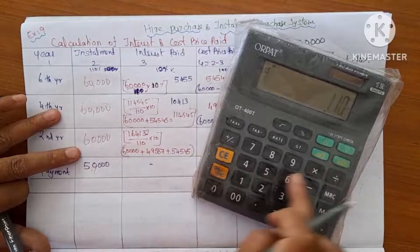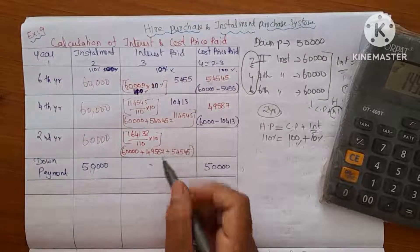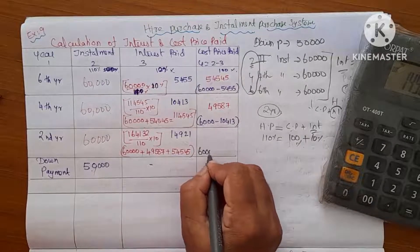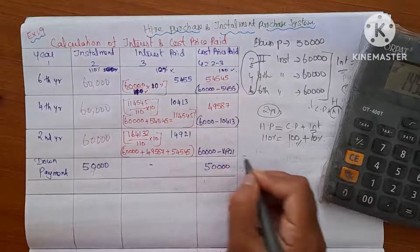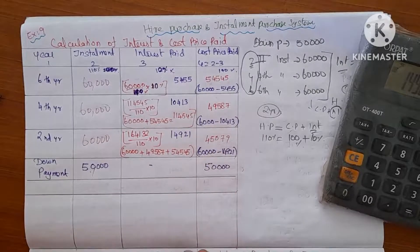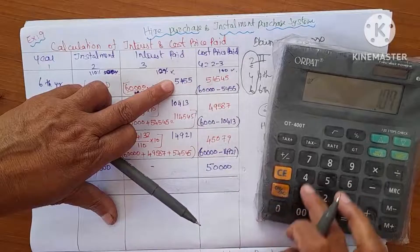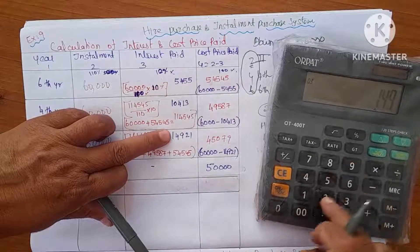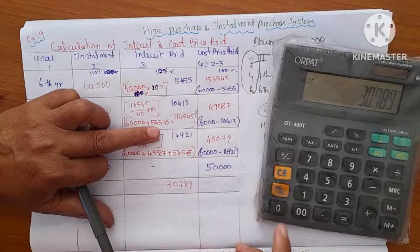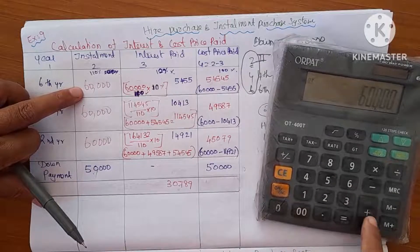164,132 divided by 110 multiplied by 10 gives 14,921. So the third installment cost price is 60,000 minus 14,921 equals 45,079. The total across all installments: 60,000 plus 60,000 plus 60,000 plus 50,000 gives the total hire purchase price.